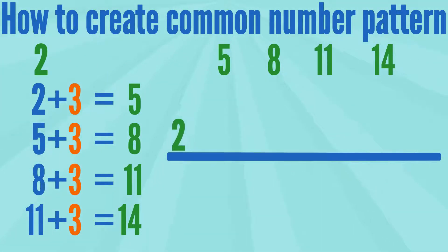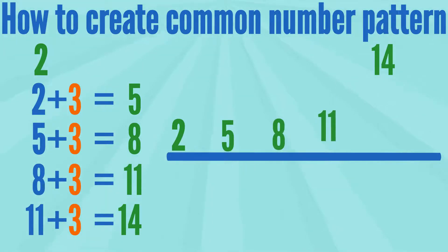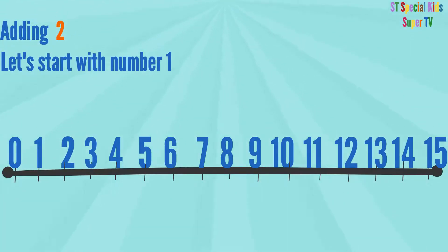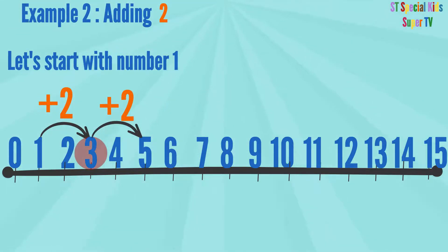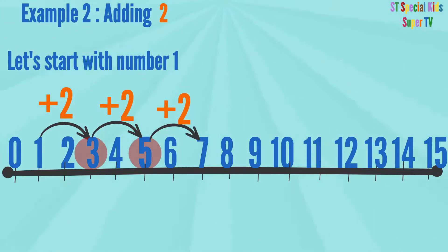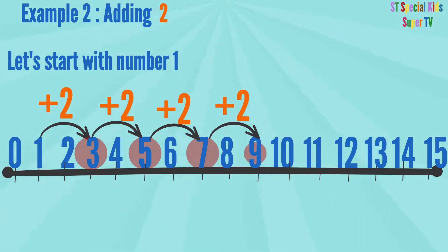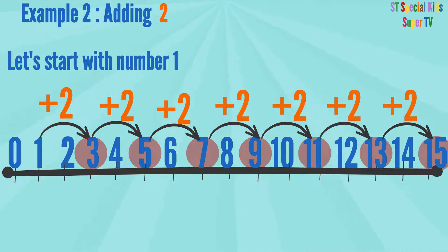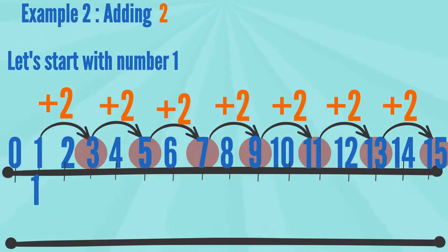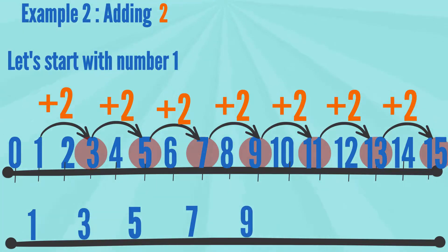Our pattern is 2, 5, 8, 11, and 14. Let's create another pattern — adding 2 and starting with the number 1. 1 plus 2 equals 3, 3 plus 2 equals 5, 5 plus 2 equals 7, 7 plus 2 equals 9, 9 plus 2 equals 11, 11 plus 2 equals 13, 13 plus 2 equals 15. So our new pattern is 1, 3, 5, 7, 9, 11, 13, and 15.